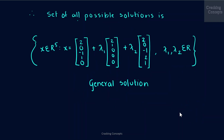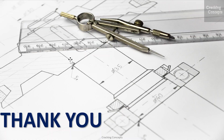The general solution is a combination of the particular solution and the solutions to Ax = 0. This is represented as x in R^5, equal to the particular solution vector (2, 0, minus 1, 1, 0), plus lambda 1 times the vector (2, 1, 0, 0, 0), plus lambda 2 times the vector (2, 0, minus 1, 2, 1), where lambda 1 and lambda 2 are real numbers. This gives us the general solution of the given set of linear equations. That's all for now, thank you for watching.